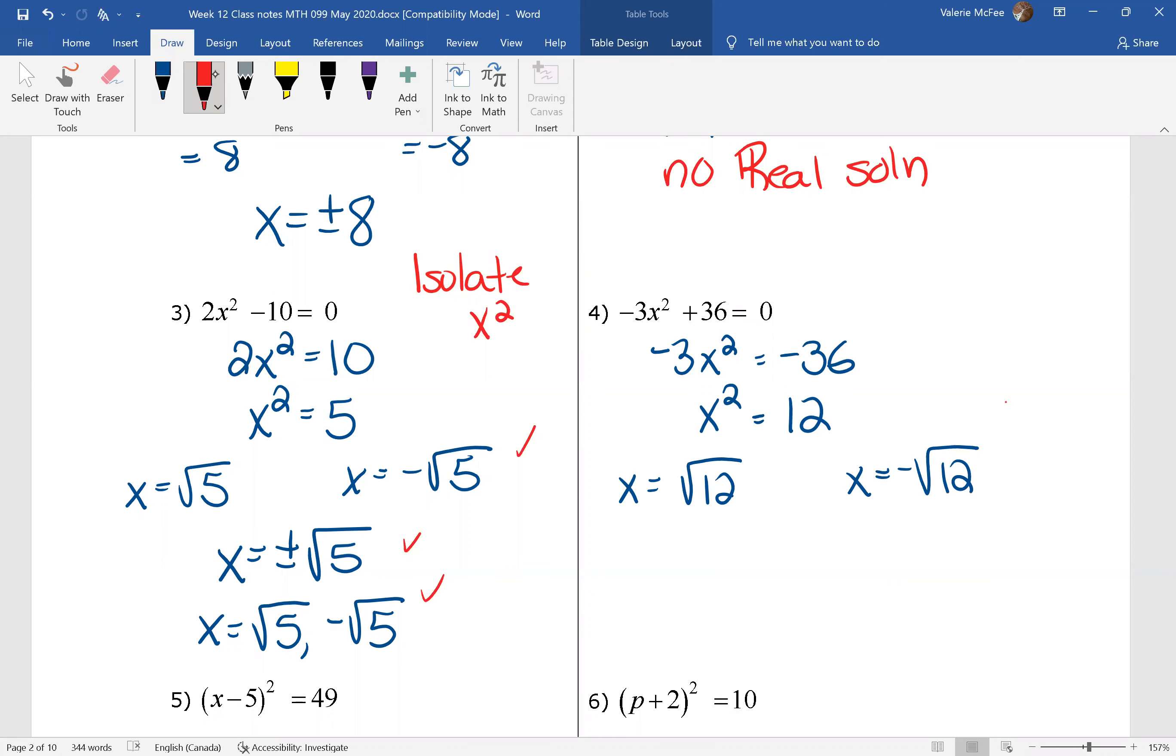Don't forget you have to simplify. You never leave a radical unsimplified. We have two 2s we can take out. So this is 2 root 3 and this one is the negative 2 root 3.